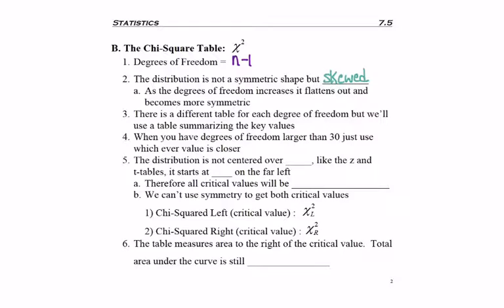Here's what's new: we just said the distribution is not symmetrical bell-shaped, and therefore it is not centered over zero like the z and the t tables. The standard normal table is centered over zero. As a matter of fact, this table starts at zero on the far left.